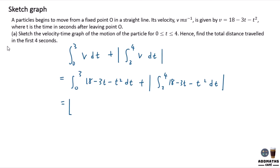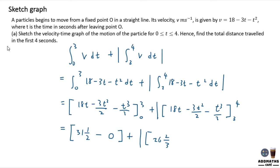And by integrating this, you will have 18t minus 3t square over 2 minus t cube over 3, from 0 to 3, plus a modulus bracket of 18t minus 3t square over 2 minus t cube over 3 from 3 to 4. By applying the equation, when you put 3 into this t, you will get answer of 31 1/2 minus 0. And if you put 4 into the equation, you will get 26 2/3, and if you put 3 into the equation, you will get 31 1/2.